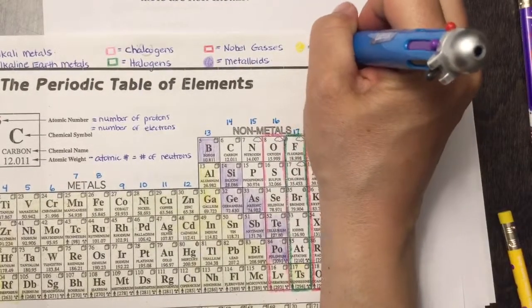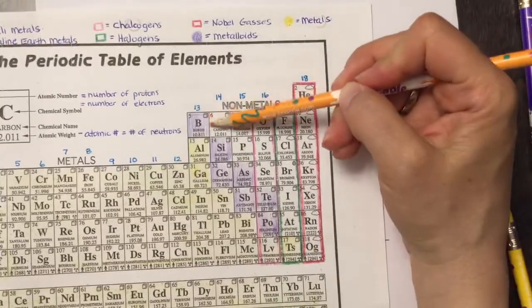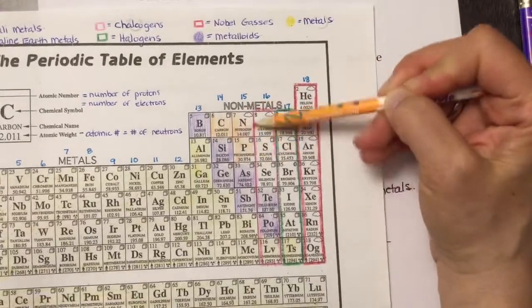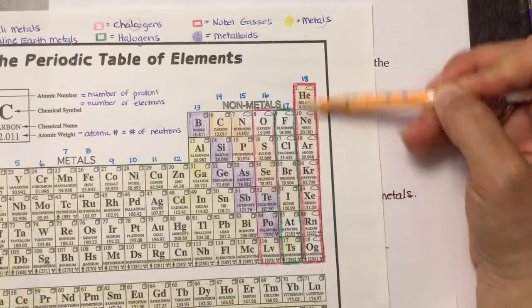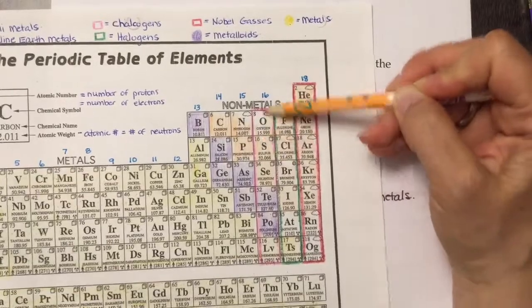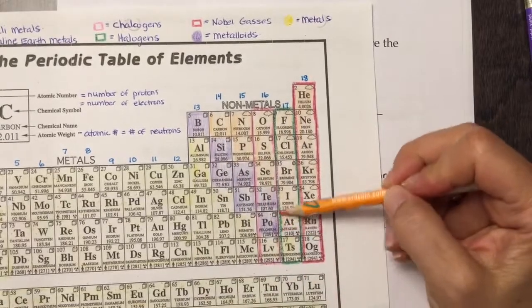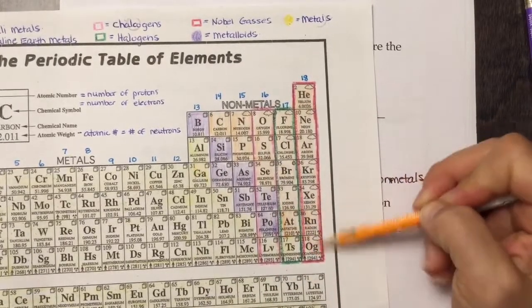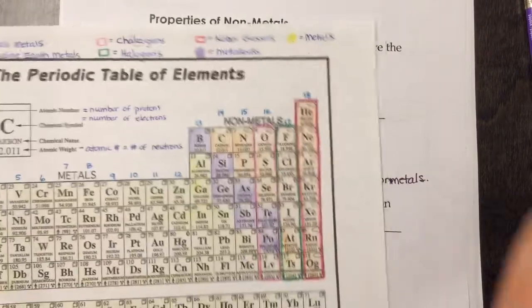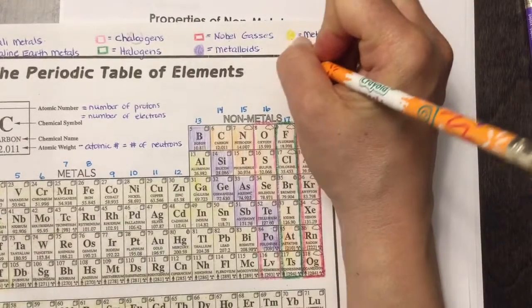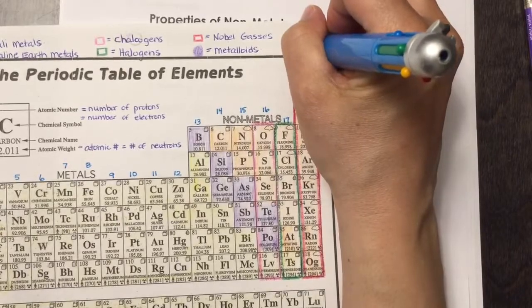I'm going to use orange to be my non-metals. Now everything to the right of the metalloids and to the right of that staircase is going to be a non-metal. We don't include hydrogen because hydrogen, although it's in that first column and has one valence electron, it's a gas. But it also has properties of alkali metals, but it's not really a metal, so we just leave it as its own family. These are the noble gases.